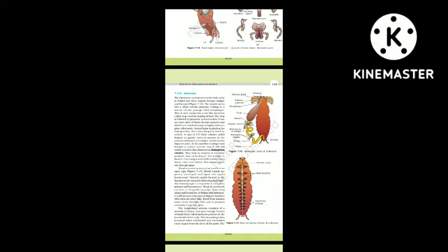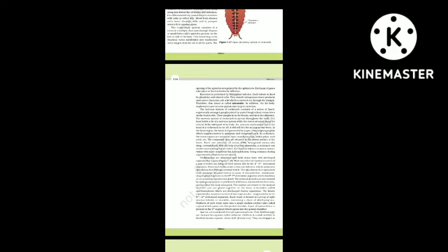Blood from sinuses enters the heart through ostia and is pumped anteriorly to the sinuses again. The respiratory system consists of a network of trachea that open through 10 pairs of small holes called spiracles, present on the lateral side of the body. Thin branching tubes (tracheoles) carry oxygen from the air to all parts. The opening of spiracles is regulated by sphincters. Exchange of gases takes place at the tracheoles by diffusion. Excretion is performed by Malpighian tubules; they absorb nitrogenous waste products and convert them into uric acid excreted through the hindgut — therefore this insect is called uricotelic.